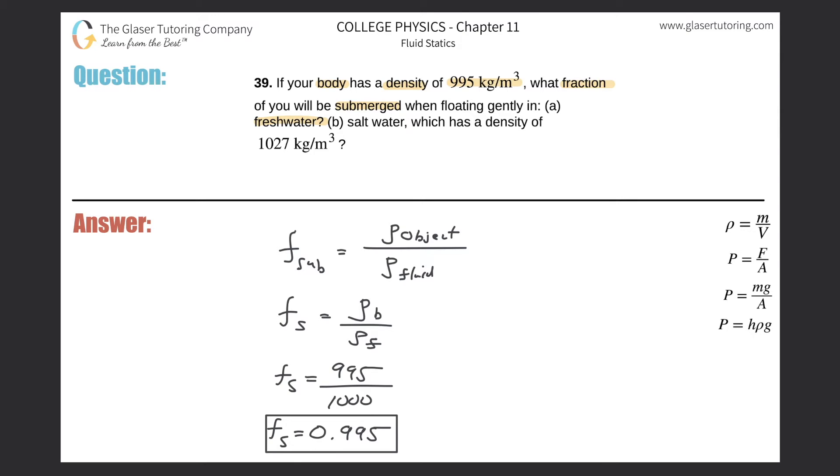That's for letter A. Letter B now says, how about if you're in salt water? We can use the same equation here. The fraction submerged is equal to the density of your body divided by the density of salt water.